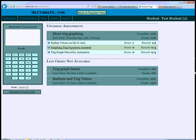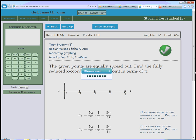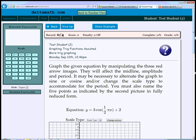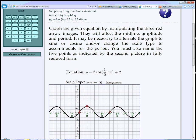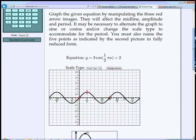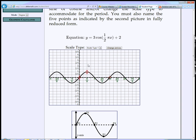So let's go back. Let's do graphing trig functions assisted. This is kind of fun. It says manipulate the 3 red arrow images. You also need to name the 5 key points. So you take this equation and we just want to move these arrows up and down. This affects the amplitude. This affects the midline. This affects the period.